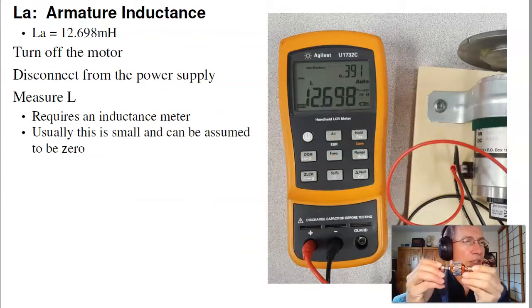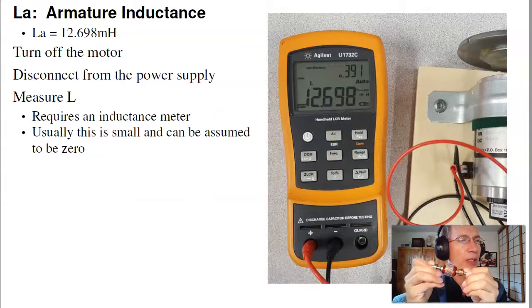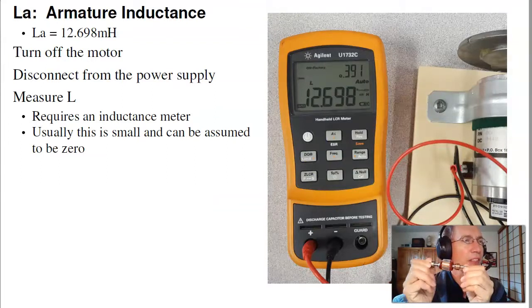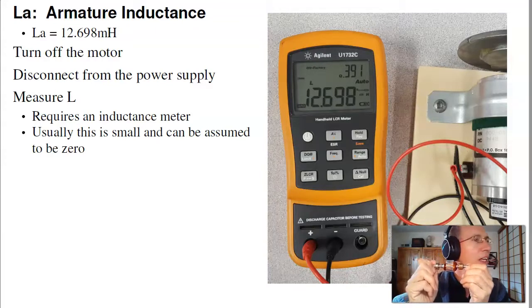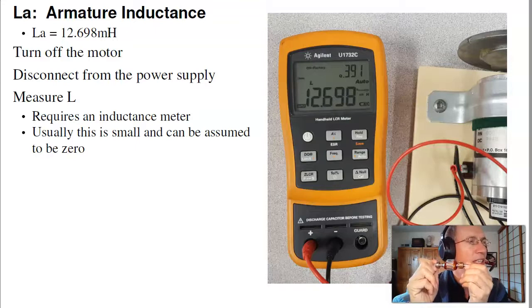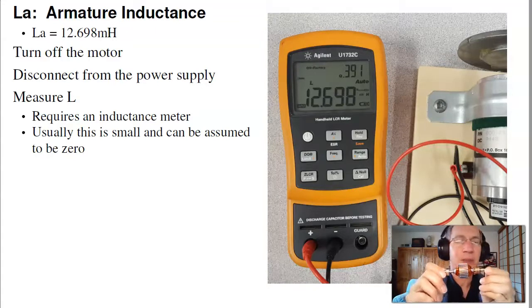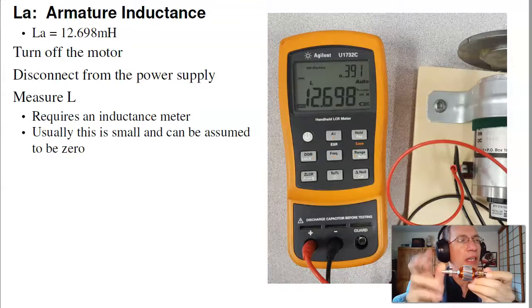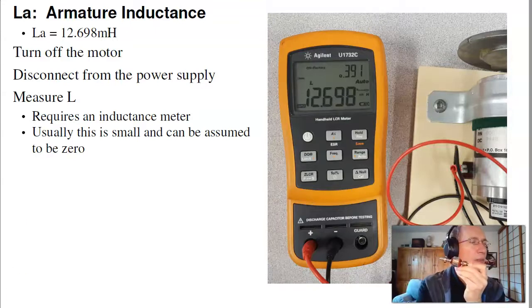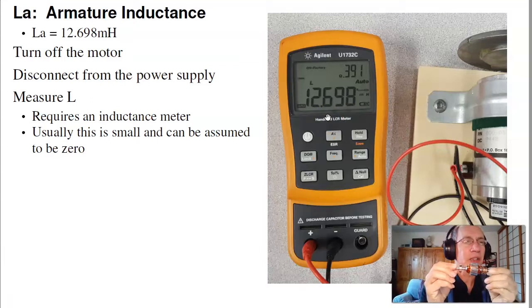If you splurge and have an inductance meter, you can measure the inductance as well. For example, this is an Agilent inductance meter that I borrowed from our technician Jeff. This tells me that the motor has an inductance of 12.698 mH. And what we'll actually see is the inductance is usually small. You oftentimes ignore the inductance because relative to the mechanical time constant, the electrical time constant is very, very fast. So anyways, that's two parameters. I've got the resistance and inductance of the armature.